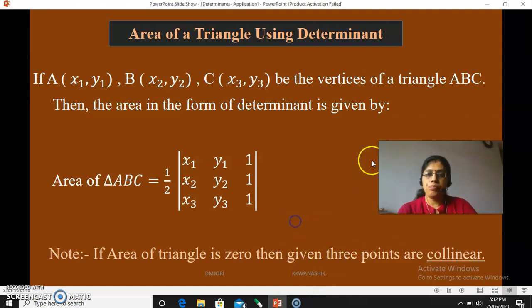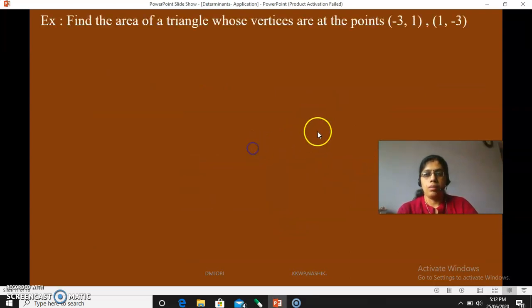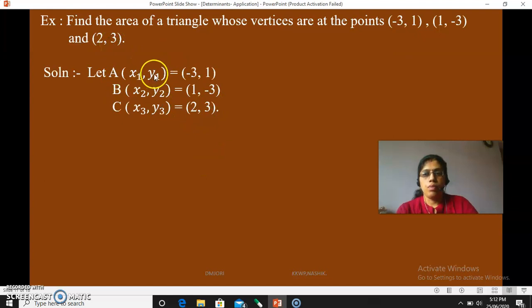Let us see one example, how to find area of triangle using determinants. Find the area of triangle whose vertices are at the points (-3, 1), (1, -3) and (2, 3). The three vertices are given. You first have to denote them by A, B, C, x1, y1, x2, y2, and x3, y3 respectively.